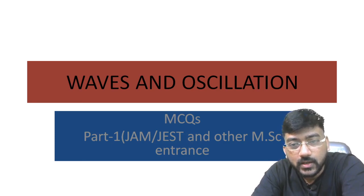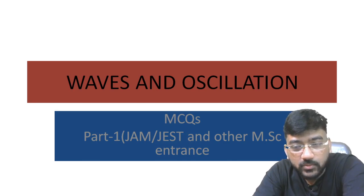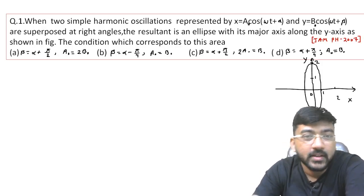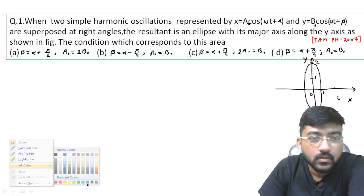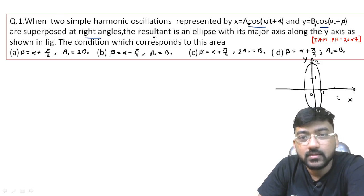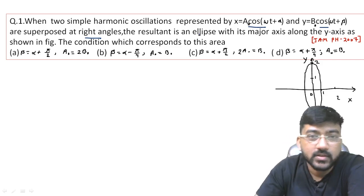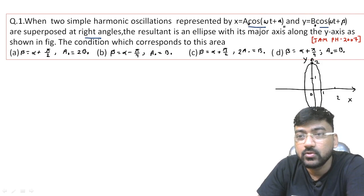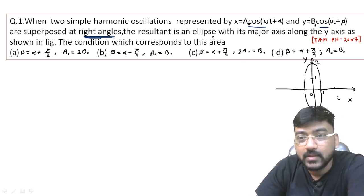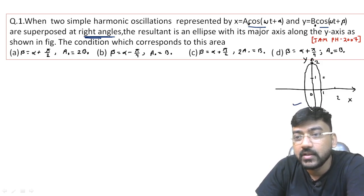The first question is from JAM/JEST 2007. When two simple harmonic oscillations represented by x = a₀ cos(ωt + α) and y = b₀ cos(ωt + β) are superposed at right angles, the resultant is an ellipse — this is a Lissajous figure. The resultant is an ellipse with its major axis along the y-axis as shown in the figure. We need to find the condition that corresponds to this.